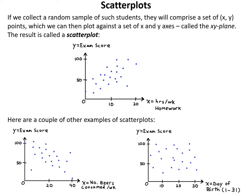Here are a couple of other examples of scatter plots. On the bottom left we have y equals exam score plotted against x equals number of beers consumed per week, and on the bottom right we have y equals exam score plotted against x equals the day of birth between 1 and 31.